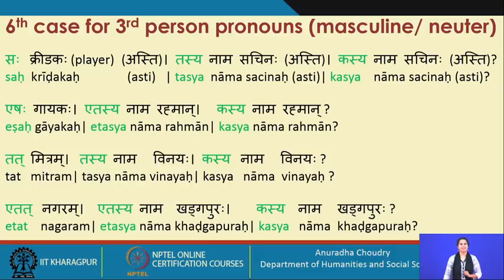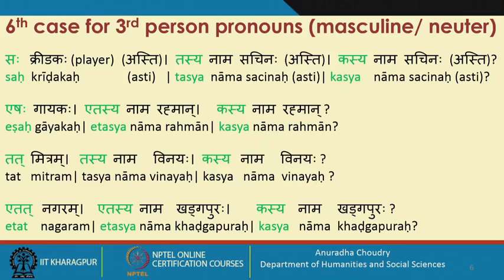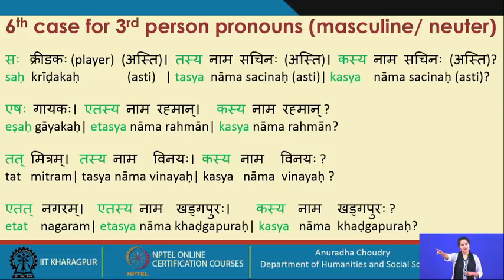We have the word sah kreedakah, meaning 'he is a player.' Tasya naam Sachinaha asti — his name is Sachin. I do a particular hand action here; I have found in my teaching that connecting certain mudras with case endings helps the mind recollect the form more easily. So: sah kreedakah, tasya naam Sachinaha. The question form is kasya naam Sachinaha, and the answer is tasya naam Sachinaha.